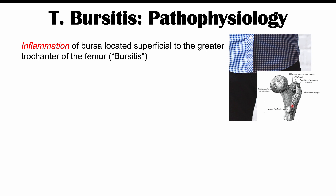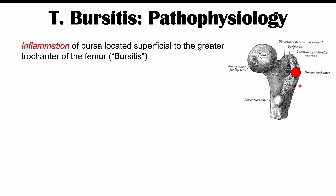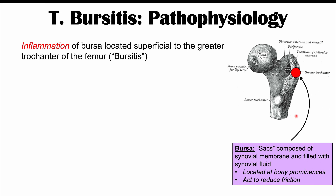The greater trochanter is a bony protuberance or bony prominence on the femur — this is where the bursa is located, superficially to the greater trochanter. Bursa are sacs composed of synovial membrane and filled with synovial fluid. They are mostly located at bony prominences — we can find them at the greater trochanter, the knees, and the elbows. They are there to reduce friction as tendons and muscles move along the bony prominence.